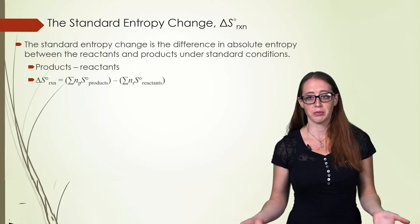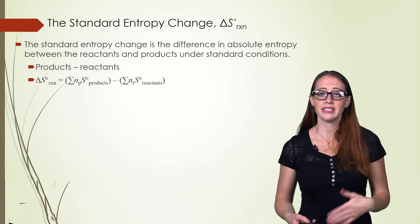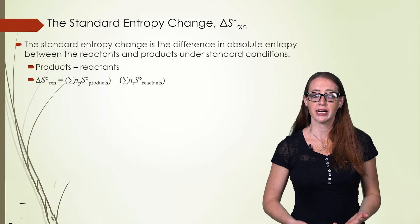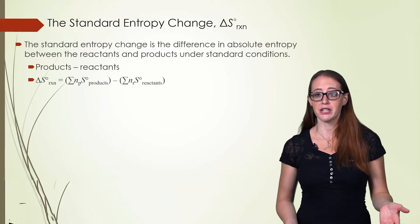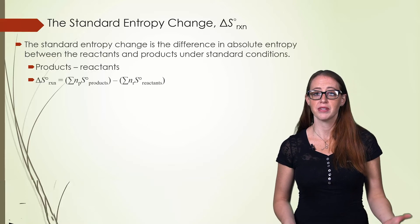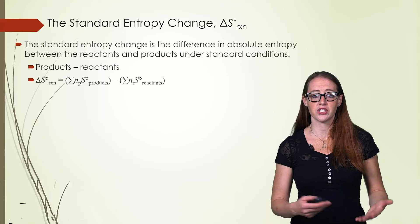Since we can look up the values of entropies in tables, we can calculate the exact entropy change by doing products minus reactants. Be sure to multiply the tabulated entropy values by the coefficients, just like what we did when we did delta H quite a while ago.